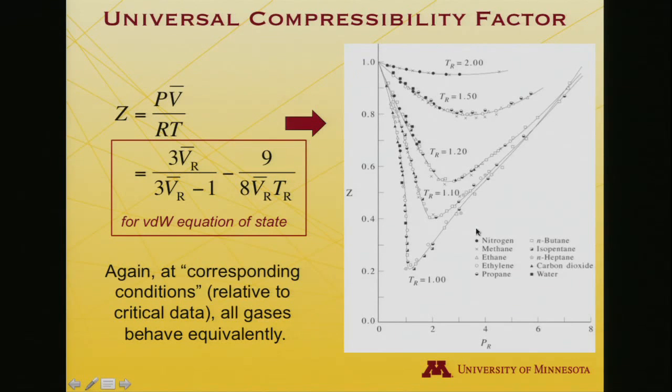these different symbols, filled circles, open circles, triangles, half-filled, and so on, all correspond to different gases. But when we plot them using their reduced temperatures and reduced pressures, they all fall on equivalent reduced isotherms.